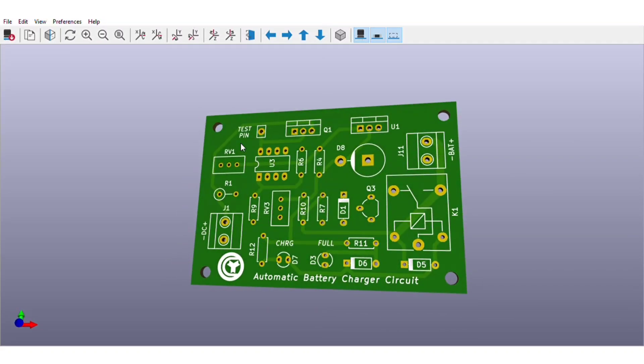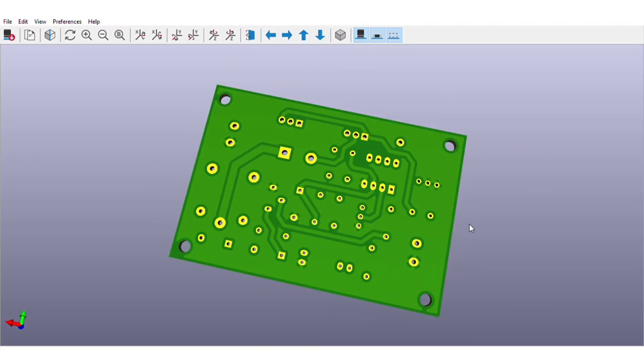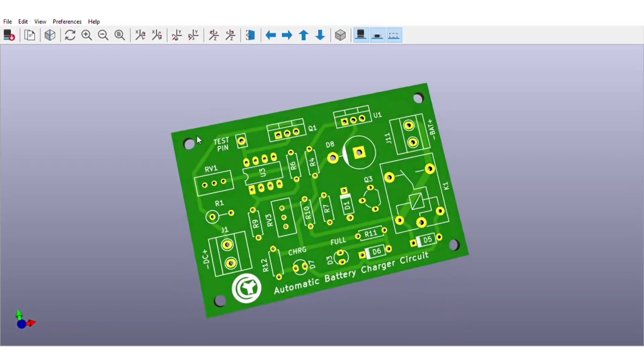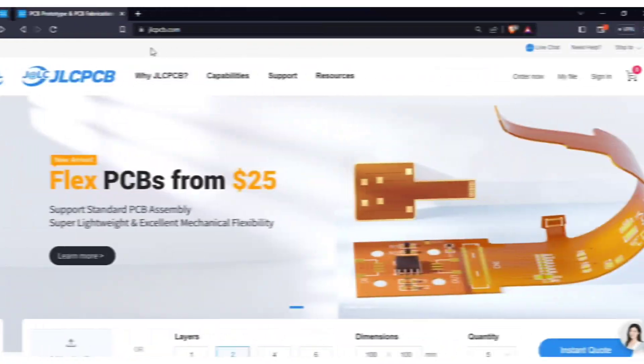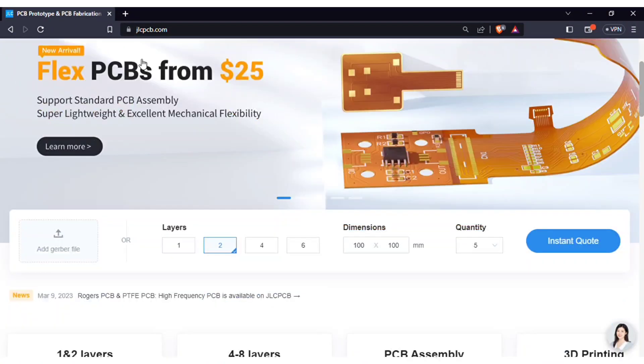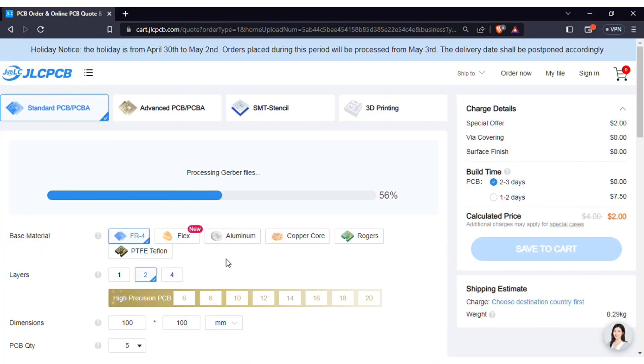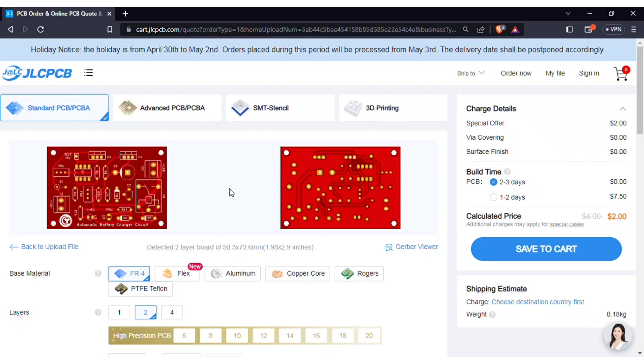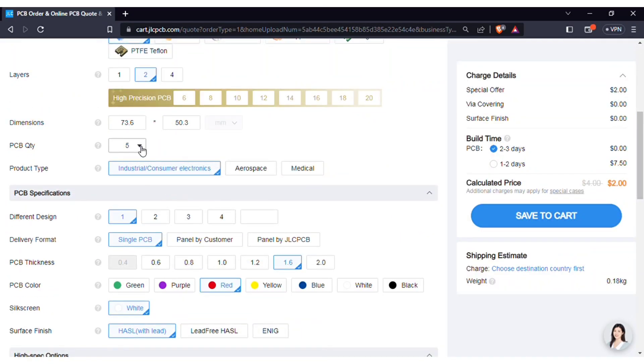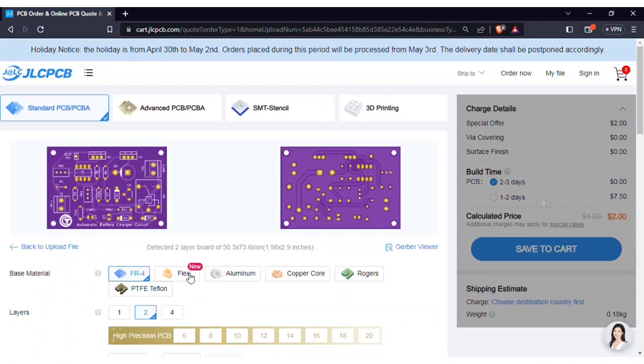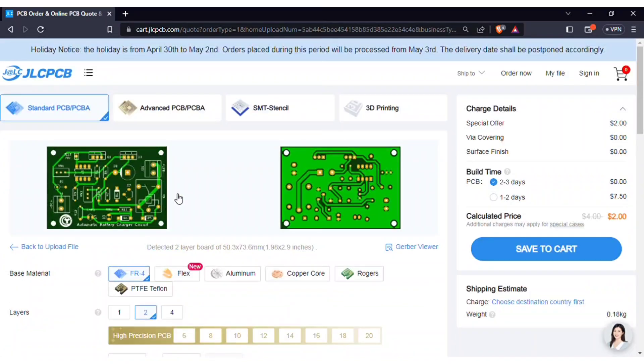You can download both circuit diagram and PCB files, link is in video description. In order to manufacture this PCB, visit JLCPCB.com and here you can add the Gerber file I provided. After uploading you can see the preview of the PCB. You can also change quantity and the color of PCBs as per your requirements and then save to cart for checkout.